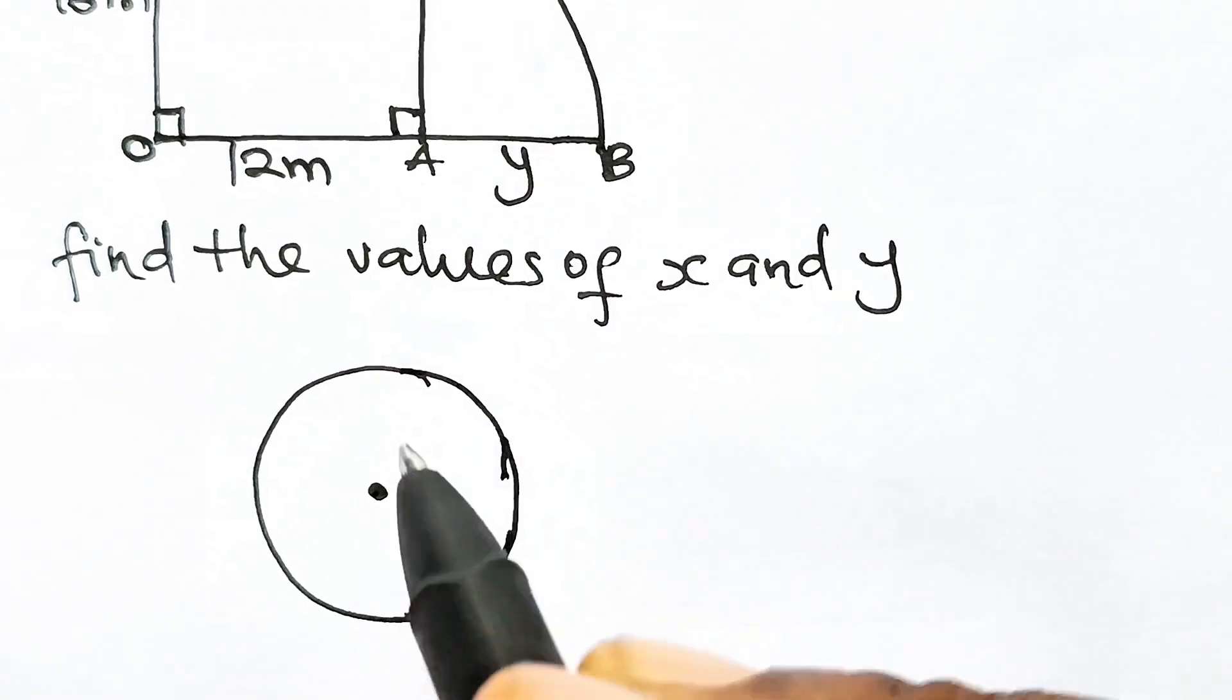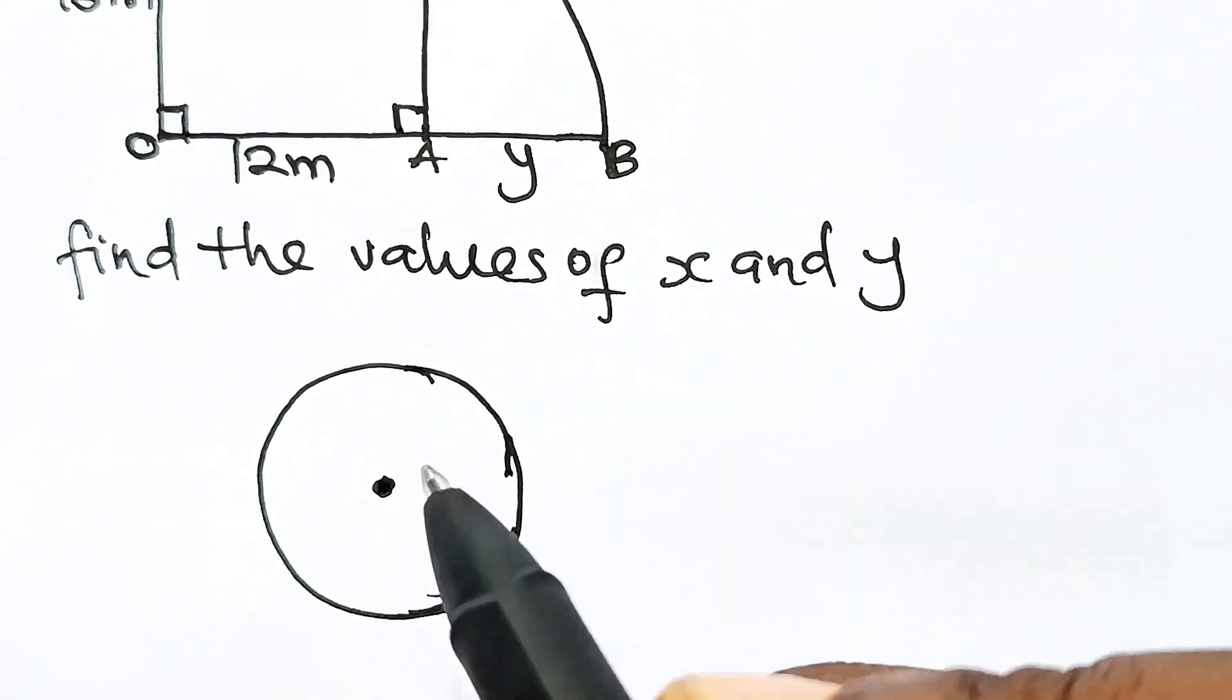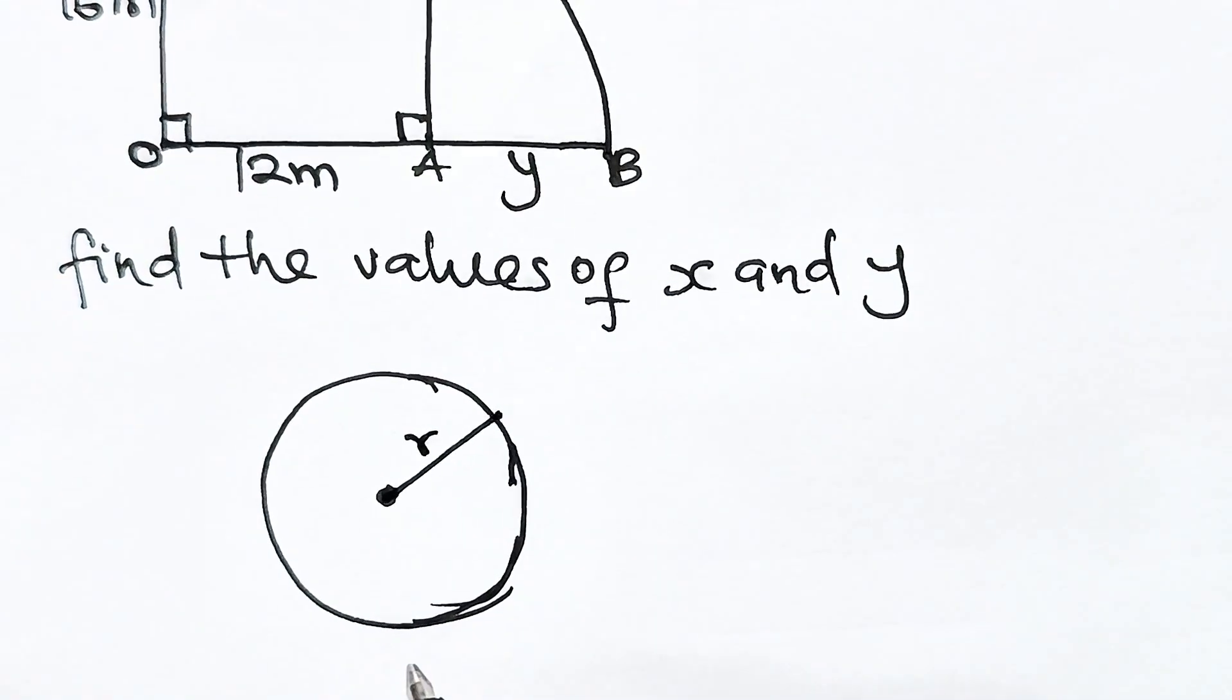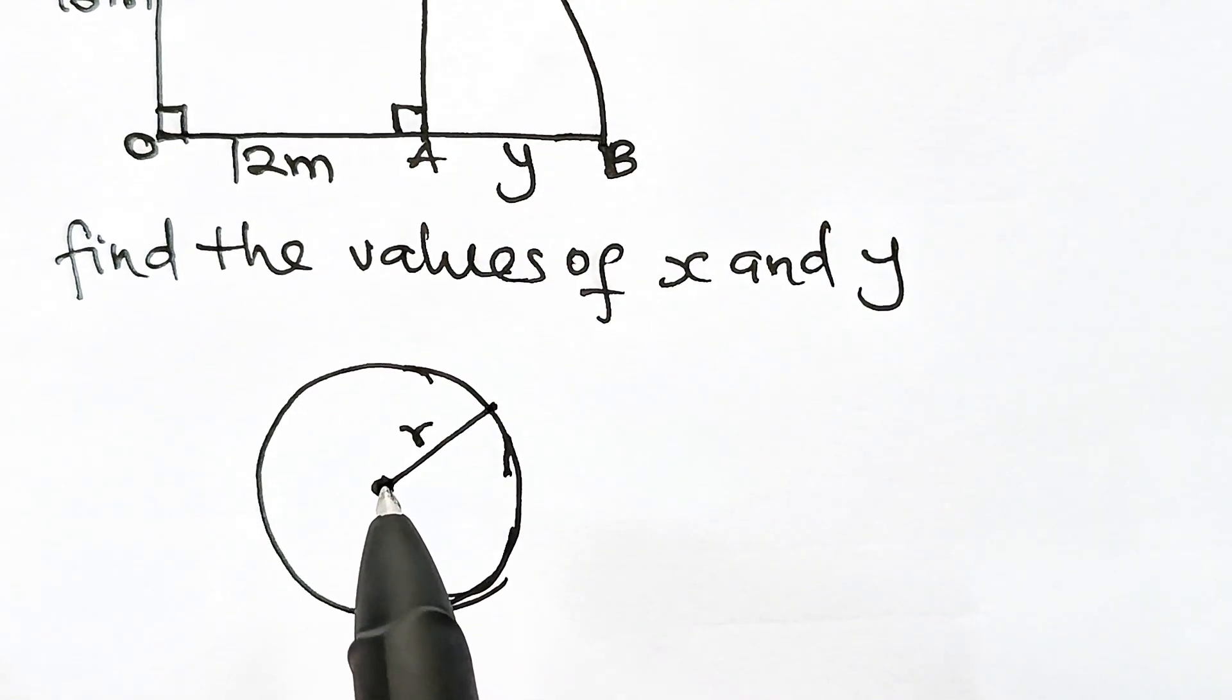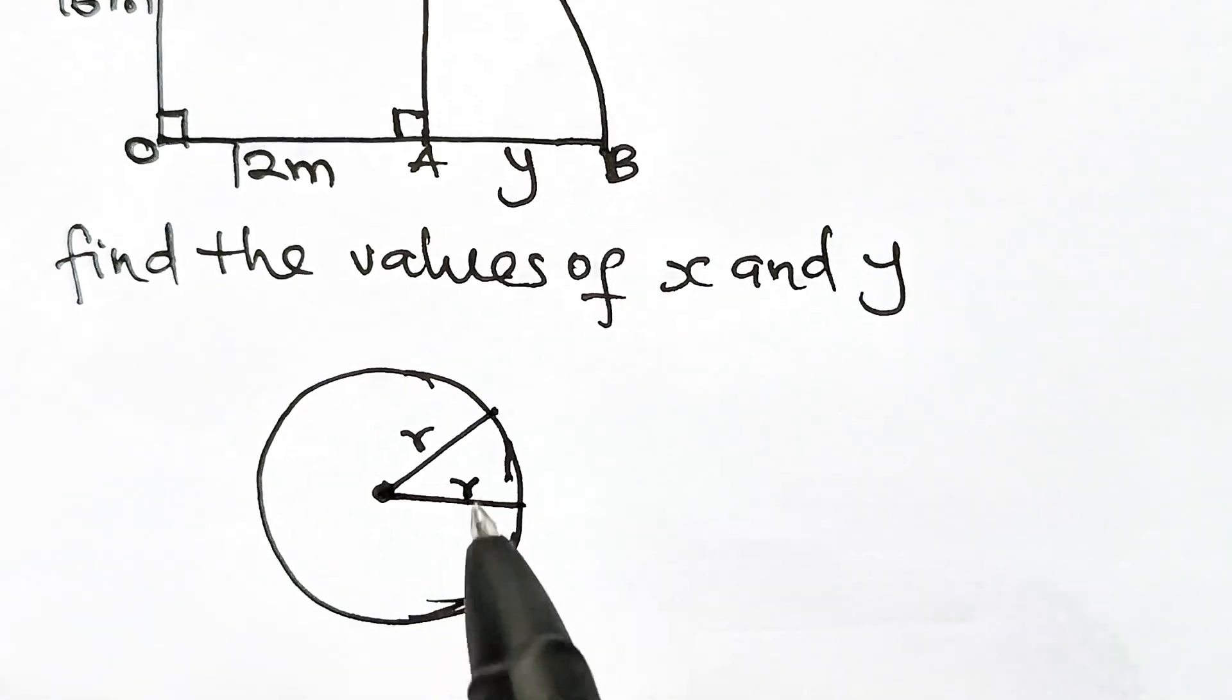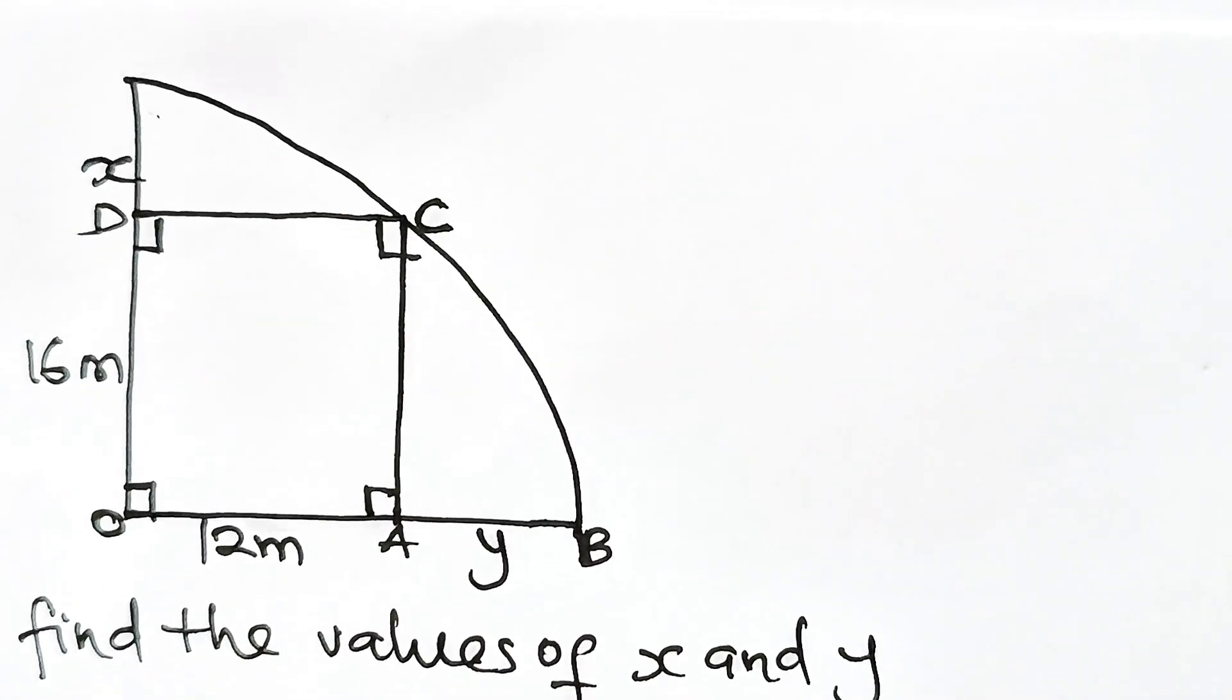Remember that in a circle of center O, any line you draw from the center to the circumference of the circle is the radius of the circle. If I draw another line from here to here, it is the radius, and radii are equal.